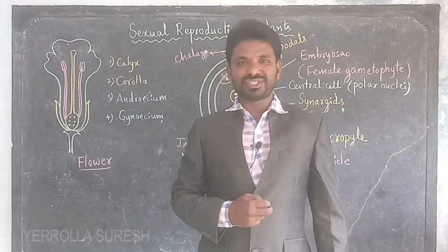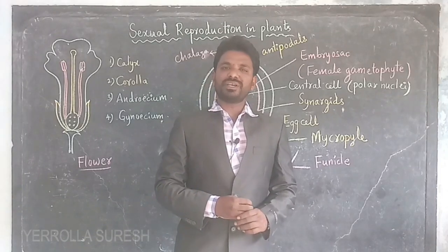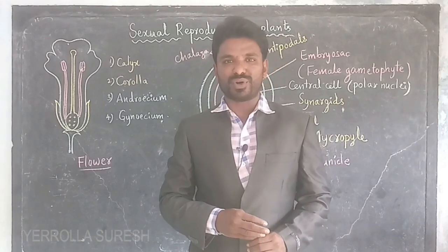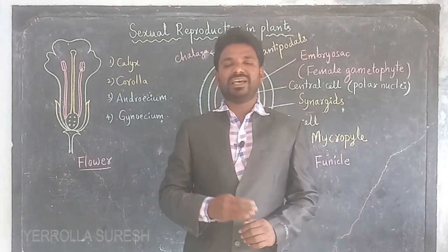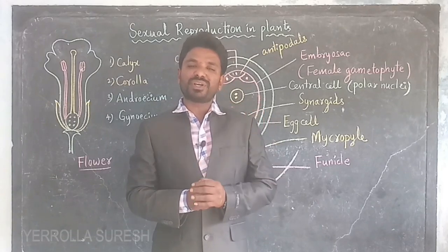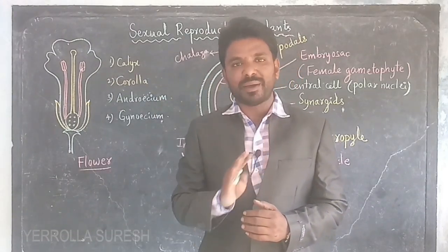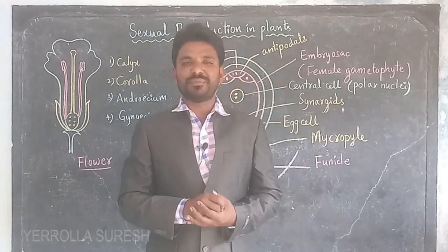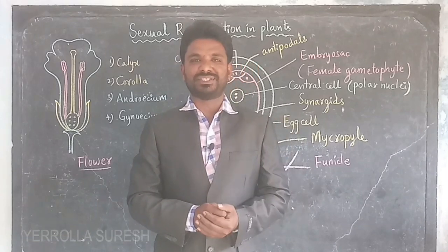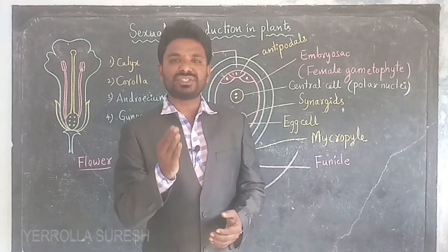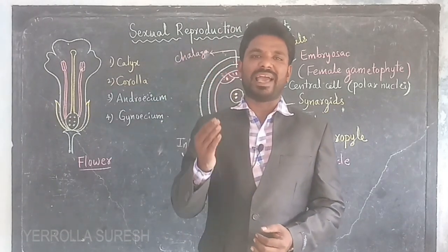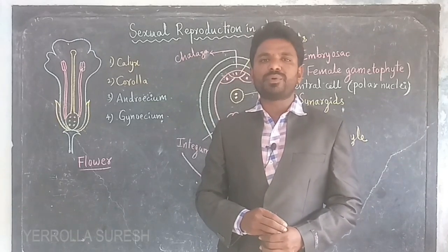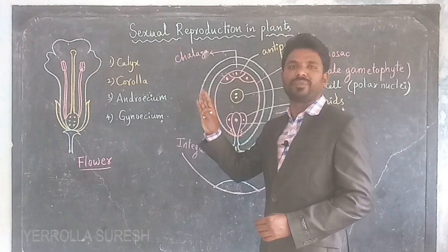Let's discuss sexual reproduction in plants. Reproduction means production of a new organism of the same species. It is mainly of two kinds: asexual reproduction, which means production of a new organism without any gametes, and sexual reproduction, which means production of a new organism with a combination of male and female gametes. Sexual reproduction is generally seen in all highly developed organisms, including plants.